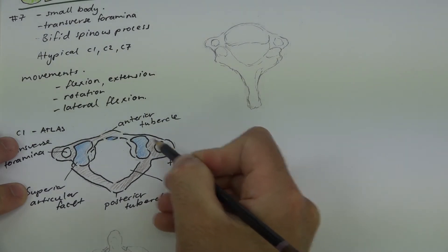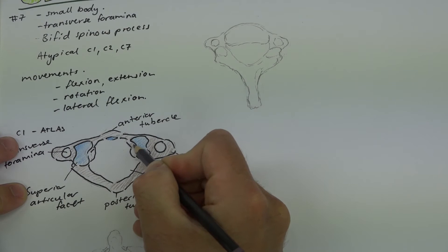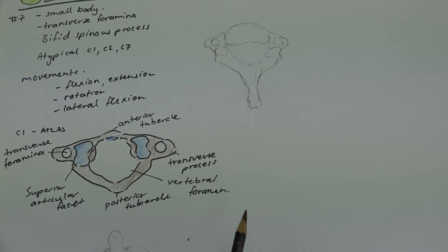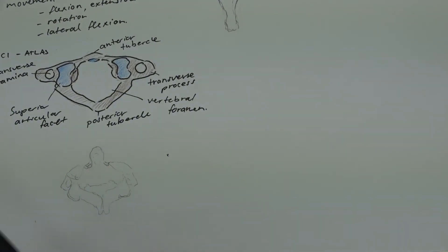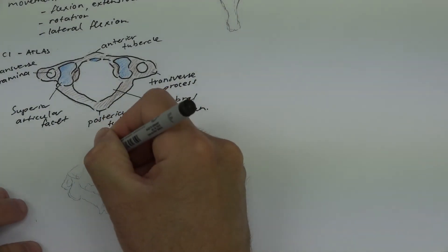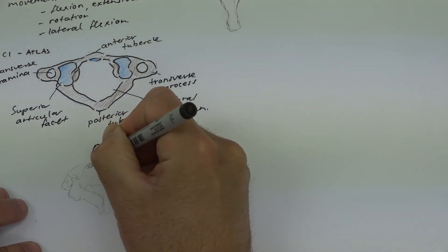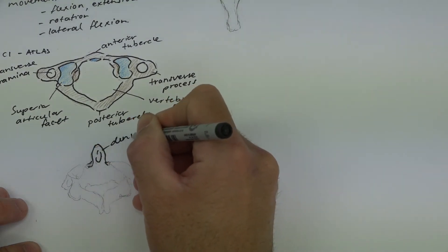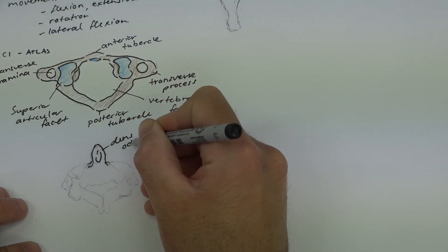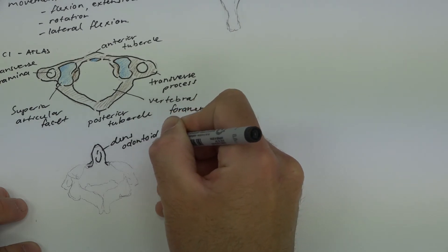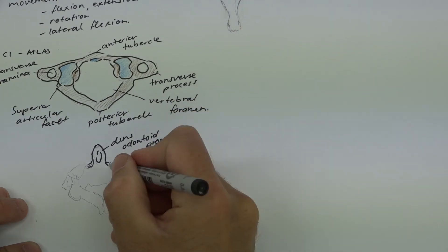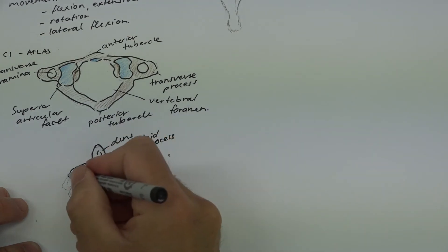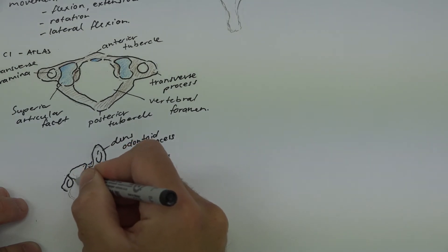The atlas is atypical because it does not have a vertebral body and does not have a spinous process. The axis is the next bone in series, and its prominent feature is the dens, also called the odontoid process — a special feature that no other bone has.